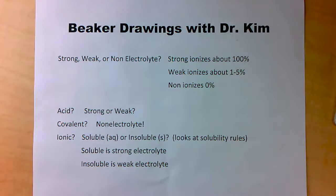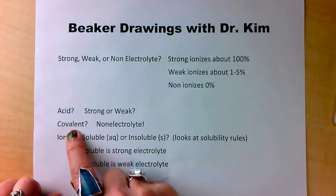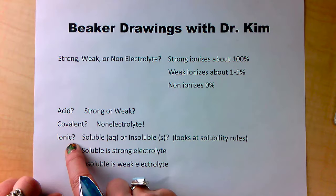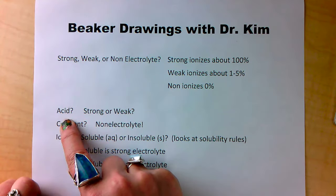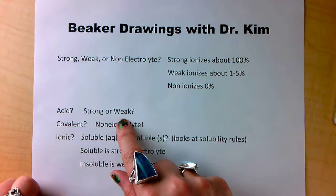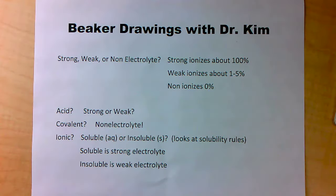The best way to approach drawing these beaker drawings is to ask yourself three questions. First, is it an acid? Second, is it covalent? Third, is it ionic? If it's an acid, your choices are either strong or weak. In Chem 130, you're supposed to know your acids and know if they are strong or weak — that is something you need to memorize from the acid chapter.